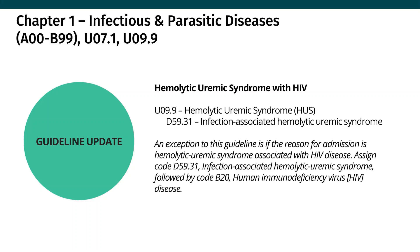For chapter one, infectious and parasitic diseases, there is one update in the guidelines for hemolytic uremic syndrome along with HIV. For all HIV related conditions, the guidelines stated code B20 for HIV should be listed as the primary diagnosis, followed by any underlying condition. However, this is an exception for hemolytic uremic syndrome if associated with HIV disease. Code D59.31 for hemolytic uremic syndrome should be coded as the primary diagnosis followed by B20 for HIV.